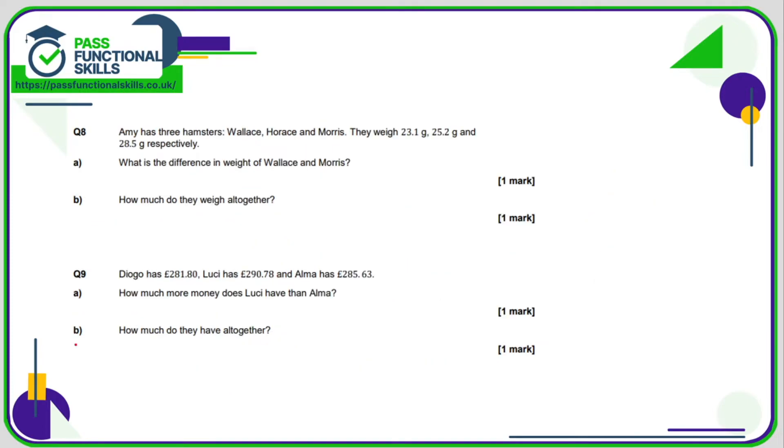For questions 8, 9 and 10 we can use the calculator which is helpful. So 8a, what is the difference in weight? So that means difference means we're doing a subtraction of Wallace and Morris. So Wallace 23.1, Morris 28.5. So since we're doing subtraction it makes sense to subtract the smaller number from the larger number, otherwise we'll get a negative value. 28.5 minus 23.1 is 5.4 cm.